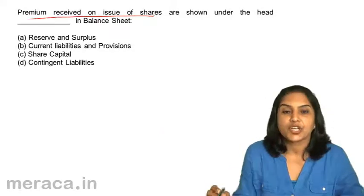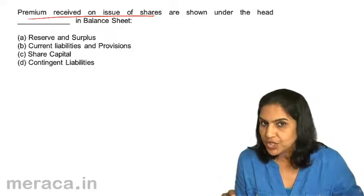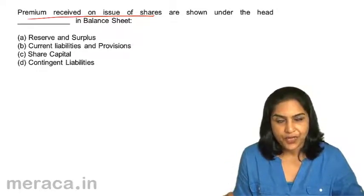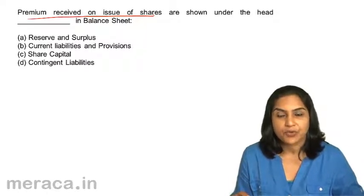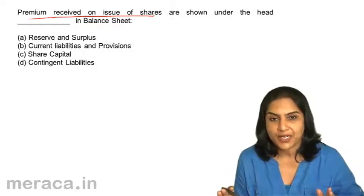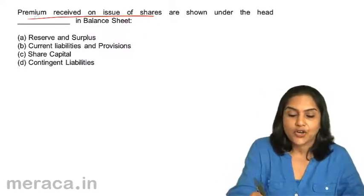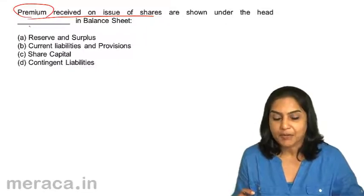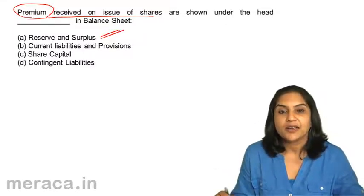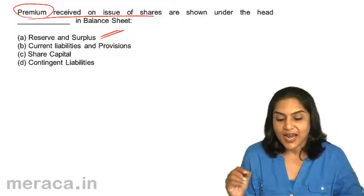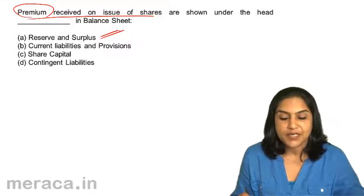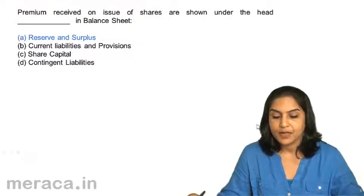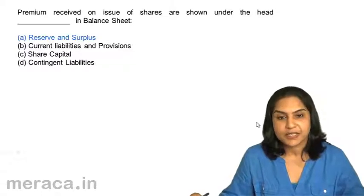Premium received on issue of shares — when a Rs. 10 share is issued, it could be issued at Rs. 12 or Rs. 15 or any other value. When it is issued at a higher value, this difference between the face value and the issue price — this profit is called premium, securities premium. It is a capital profit and it is therefore shown under Reserves and Surplus. Securities premium is an item of capital profit and it appears in Reserves and Surplus. Correct answer is A.